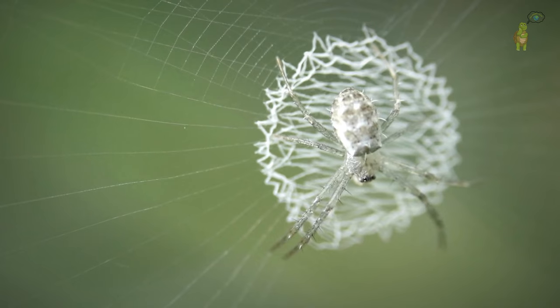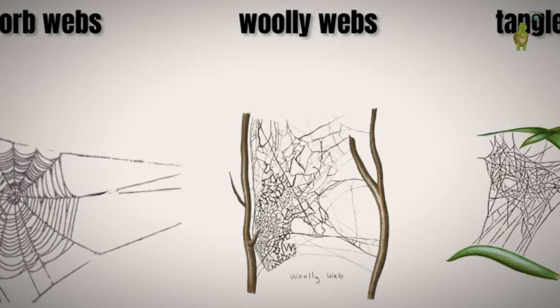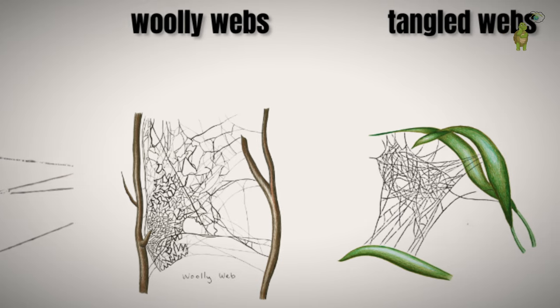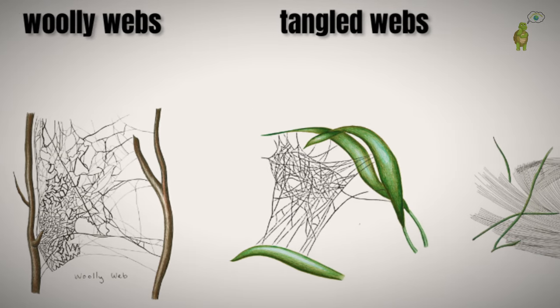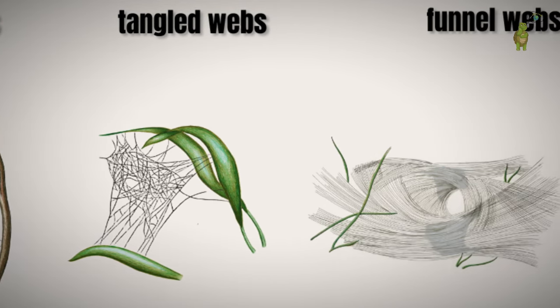They create a diverse array of web types, including spiral orb webs, woolly formations, tangled structures, sheet-like designs, funnel-shaped constructs, and much more.